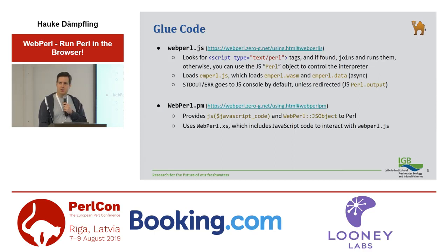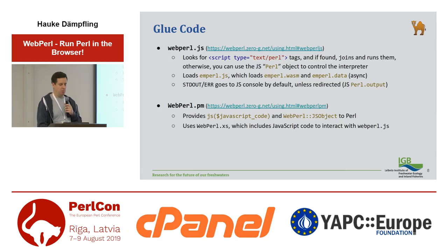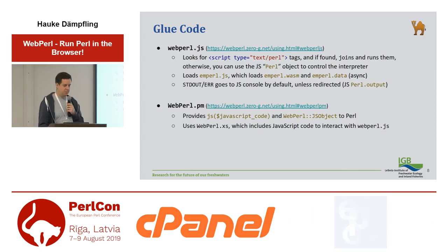On the JavaScript side, there's webpearl.js — the JavaScript file you would include into your HTML file. What it does is look for script tags of the type text/perl. If it finds them, it will concatenate them into one big Perl script and run that. If it doesn't find any, then it won't run the interpreter, but you can control the interpreter with an object called Perl. webpearl.js will load mpearl.js, which in turn will automatically load mpearl.wasm and mpearl.data for you. By default, standard output and standard error goes to the JavaScript console, but of course you can redirect that anywhere you like.